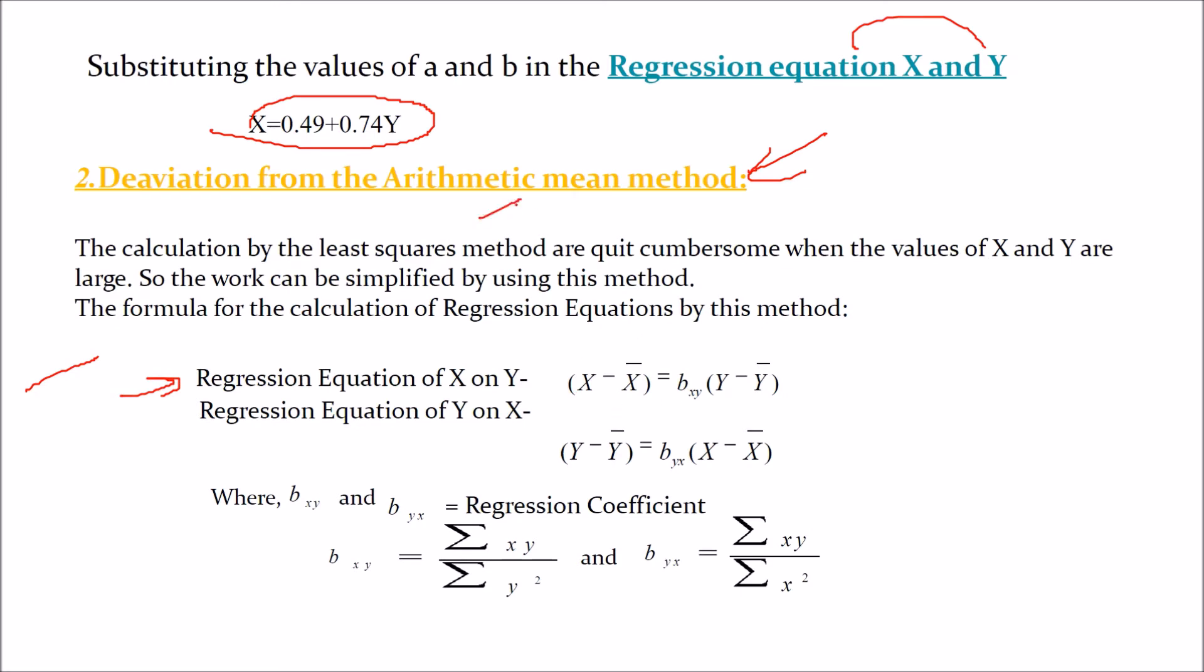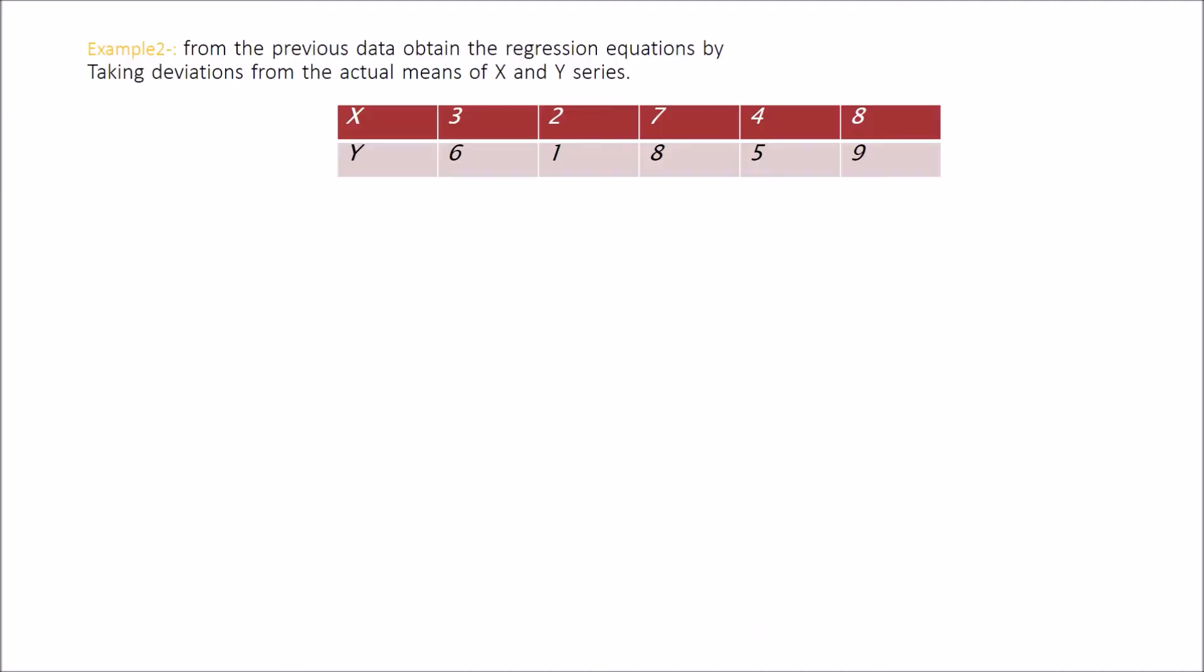So just to reduce the task or the cumbersomeness, let us see. We have regression equation of X on Y. The new equation for this method is X minus X bar equals BXY times Y minus Y bar. While the regression equation of Y on X is Y minus Y bar equals BYX times X minus X bar. BXY can be computed by sigma XY by sigma Y square. BYX by sigma XY by sigma X square. Let us take the same data and apply this method.